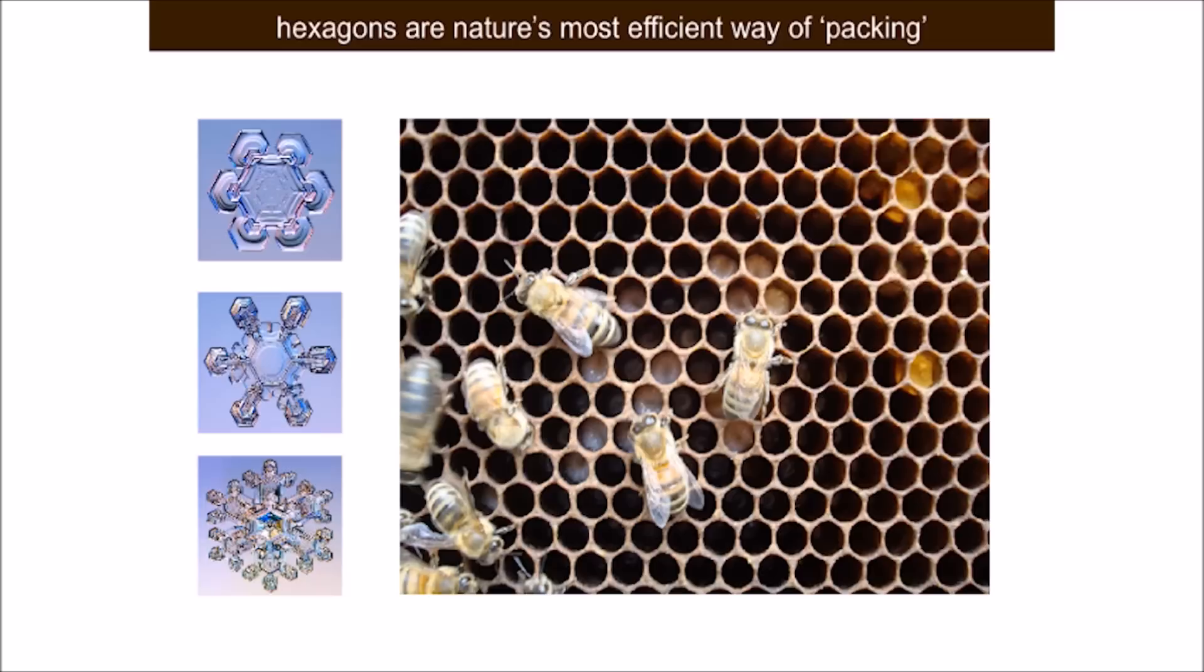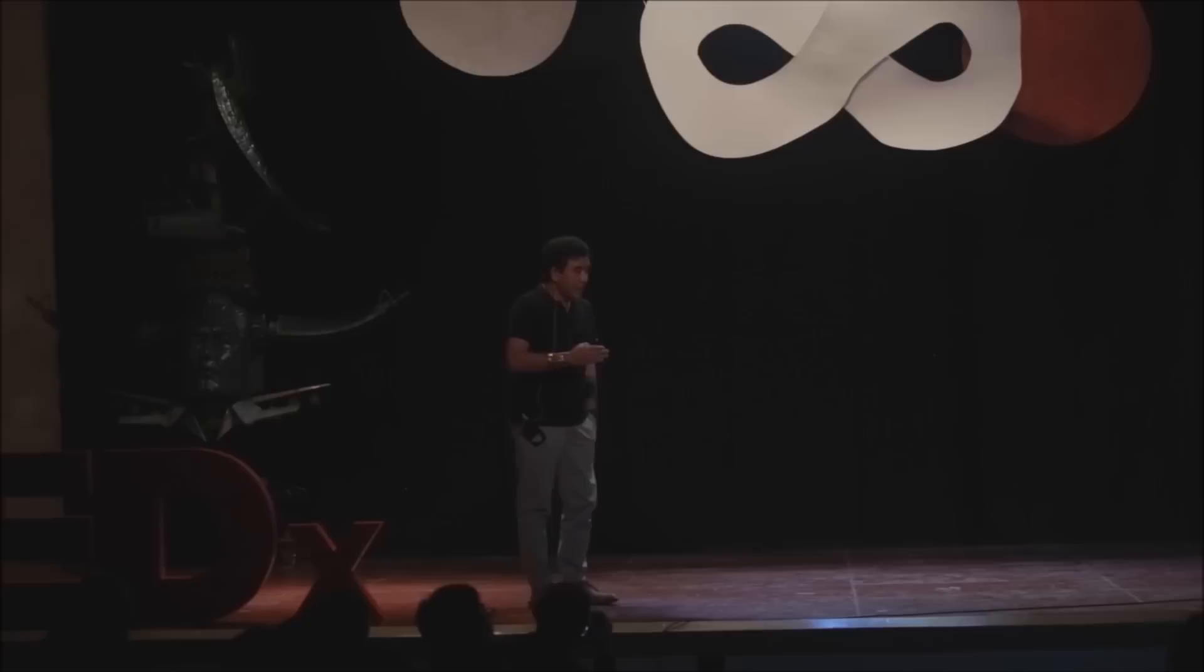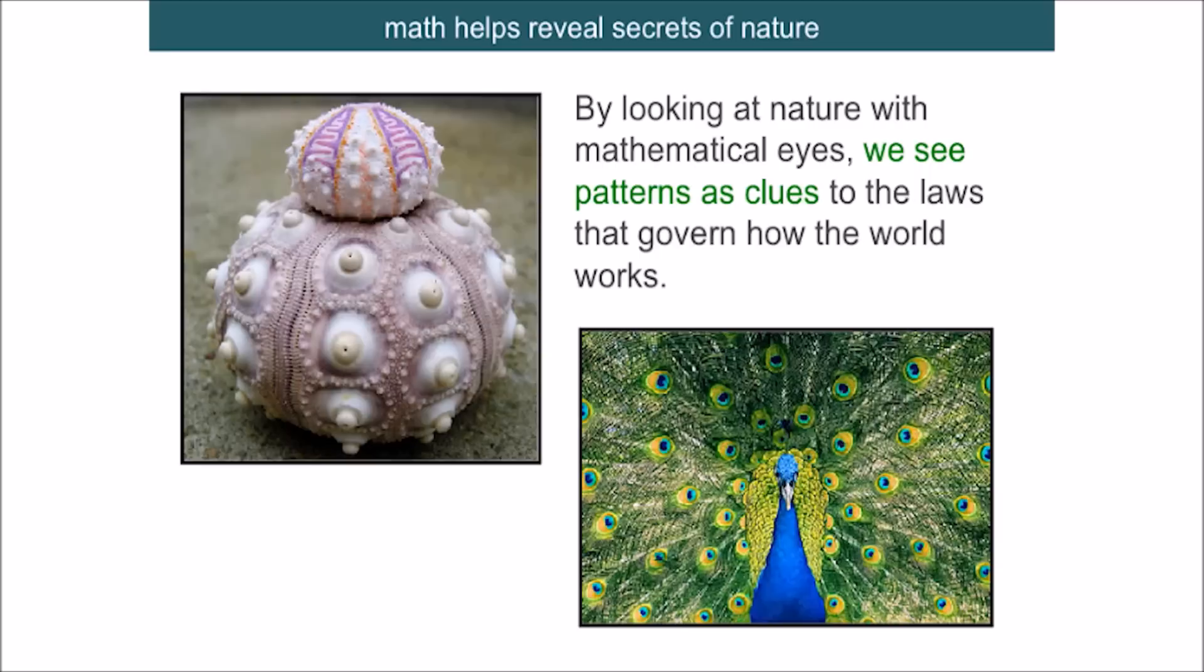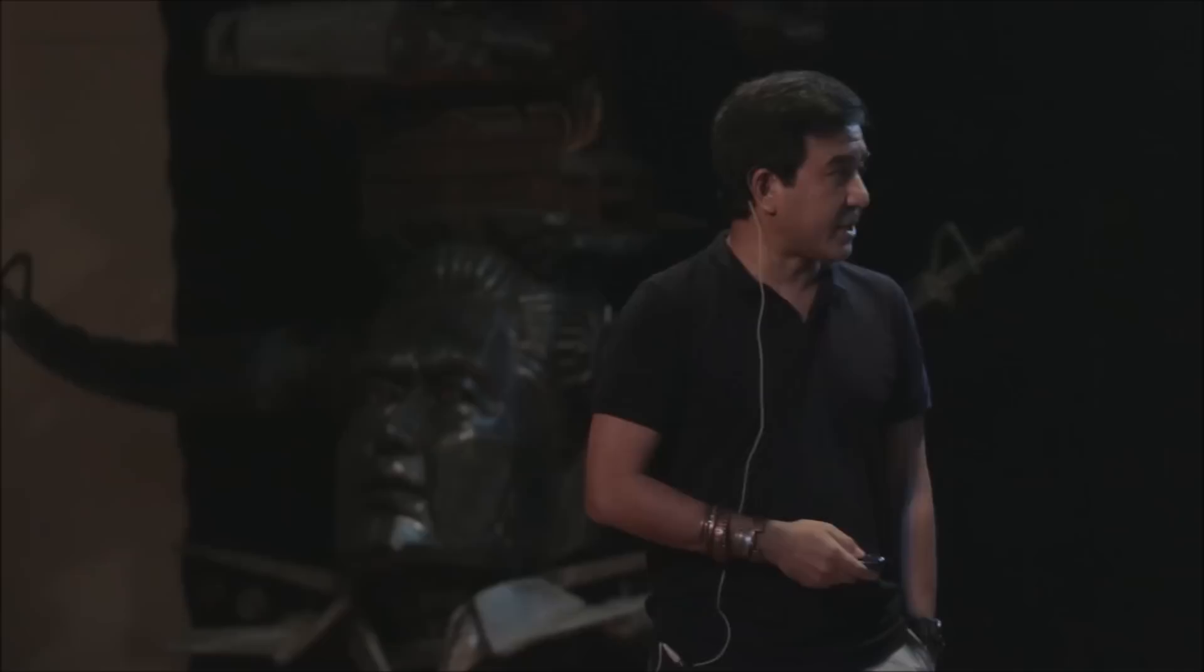This is the reason why bees use the number six. They build hexagonal cells. The reason why they do this is this is an optimal way of building the structure. By using the number six, they minimize the amount of building material while maximizing storage space. Nature is full of patterns, and by looking at nature from a mathematical perspective, we are able to detect those patterns which bring us close to a deeper understanding of the natural world.